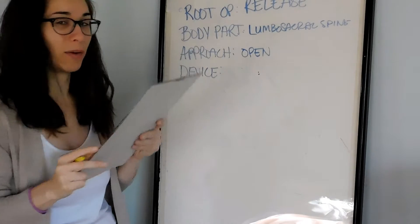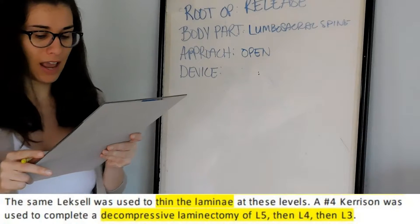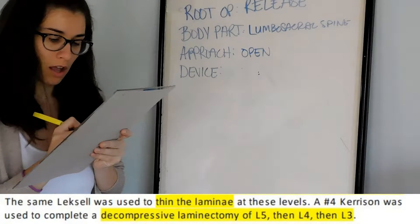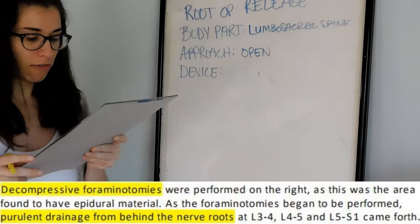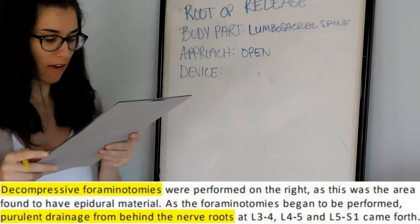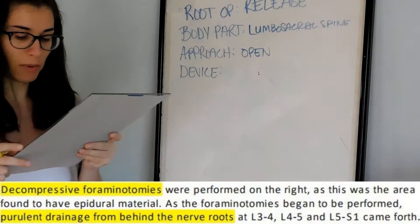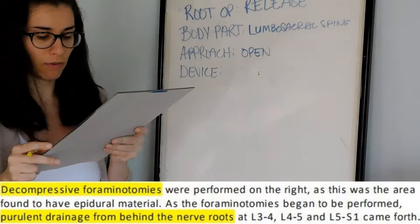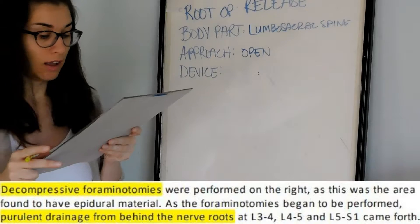The same Lexal was used to thin the laminae at these levels. A number four Kerrison was used to complete a decompressive laminectomy of L5, then L4, then L3. Decompressive foraminotomies were performed on the right, as this was the area found to have epidural material. As the foraminotomies began, purulent drainage from behind the nerve roots at L3-4, L4-5, and L5-S1 came forth.